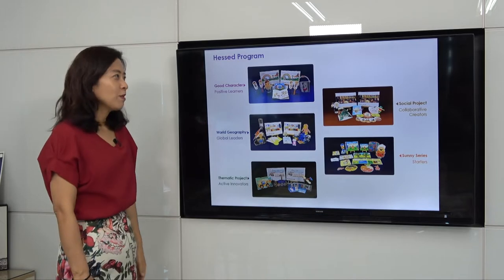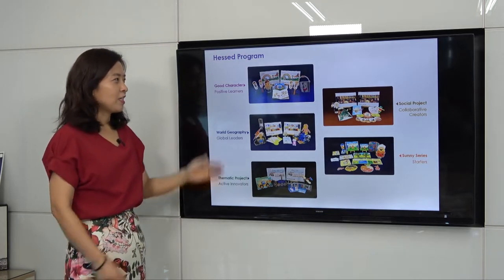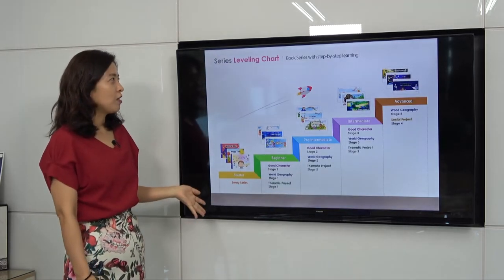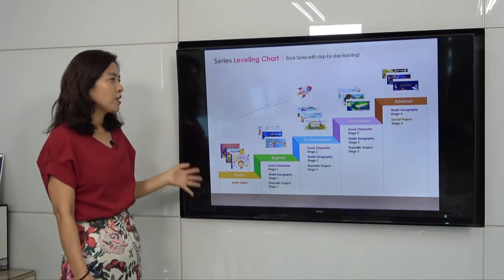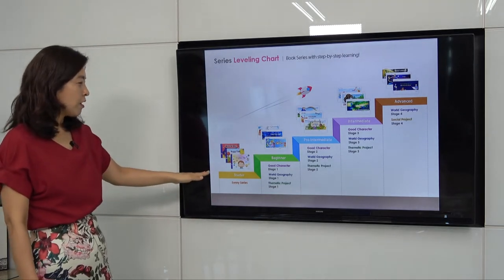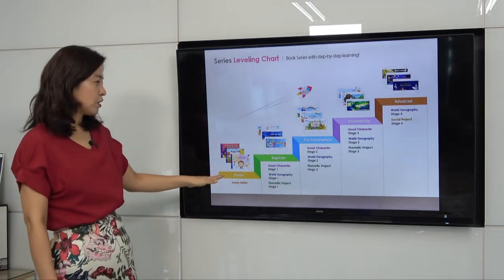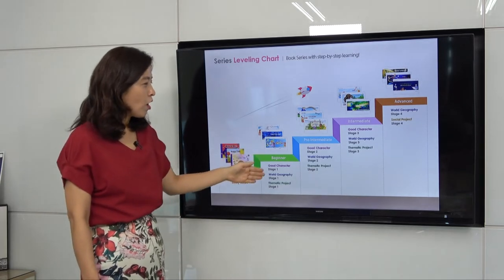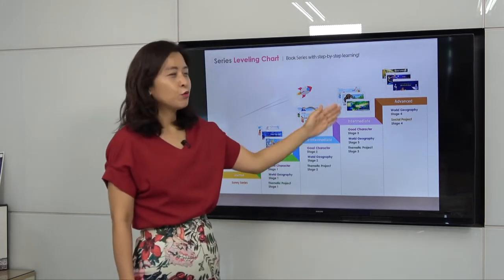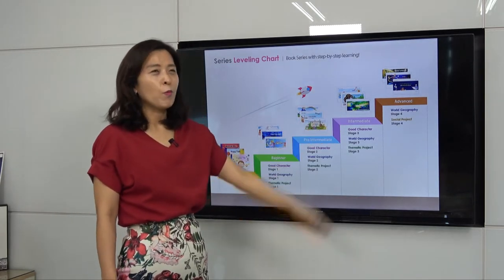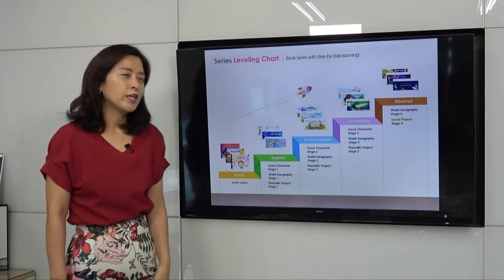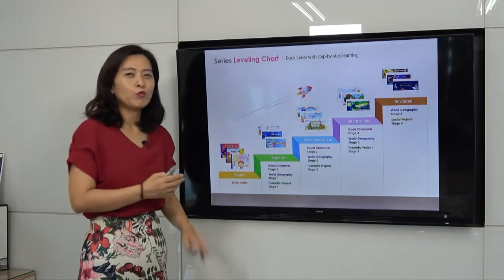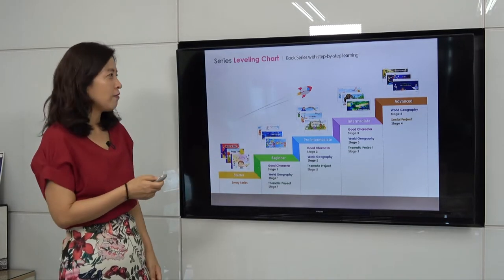This time I'm going to explain about good character. When you look at this leveling chart, we have a starter for the sunny series and a beginner for stage one through stage four. For good character, we have stage one through stage three — three different stage levels.